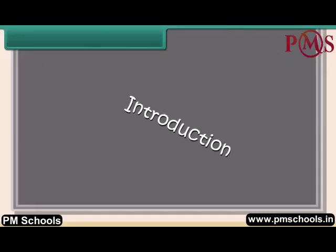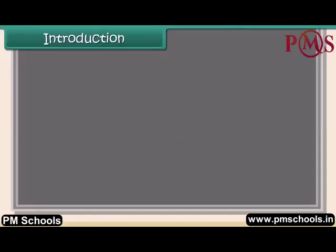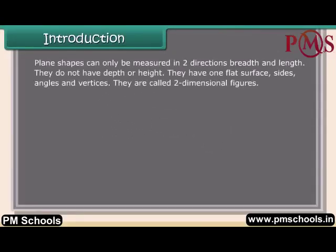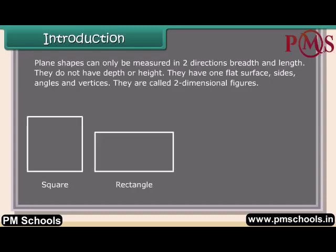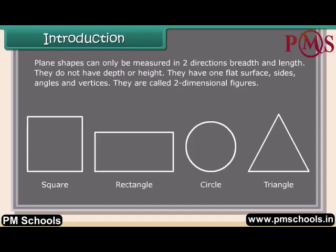Plane shapes can only be measured in two directions: breadth and length. They do not have depth or height. They have one flat surface, sides, angles, and vertices. They are called two-dimensional figures, such as square, rectangle, circle, and triangle.